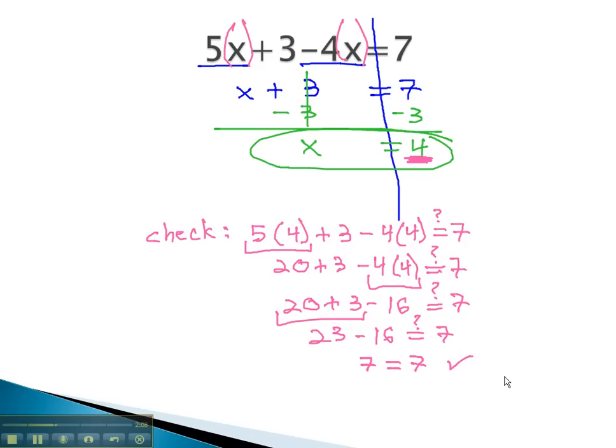It checks. We have found the answer of 4, the only answer that will make our equation a true equation. When x is equal to 4, then 5x plus 3, minus 4x really does equal 7.